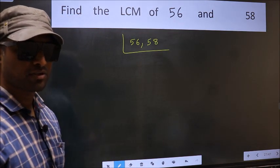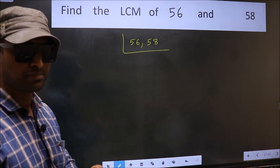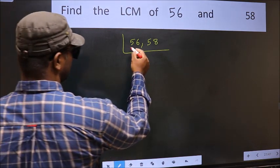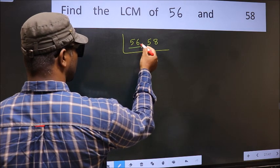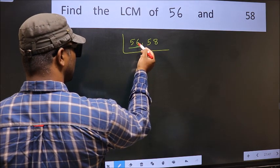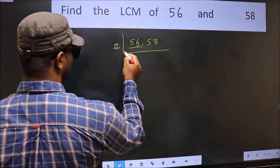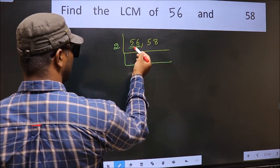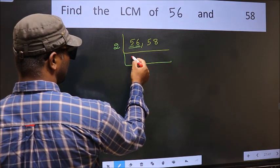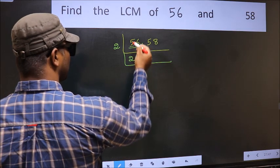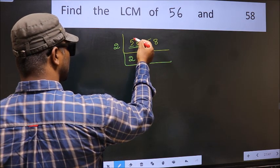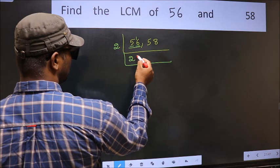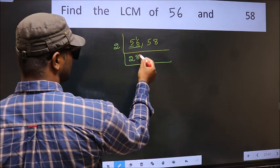Now focus on the first number, which is 56. The last digit is 6, so take 2. The first digit is 5. A number close to 5 in the 2 table is 2 2's, which is 4. 5 minus 4 is 1, carried forward gives 16. When do we get 16 in the 2 table? 2 8's are 16.